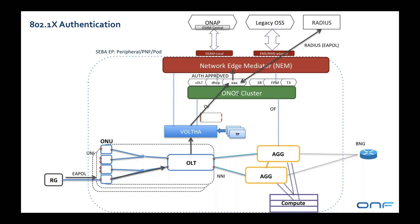The authorization-approved event is picked up by the NEM layer, which then makes a call down to the OLT application in ONOS. The OLT application sends OpenFlow rules down to Volta, which are sent to both the OLT and the ONU to configure the PON to tag the user's traffic with the right VLANs assigned to that user, and forward it up the NNI to the aggregation.